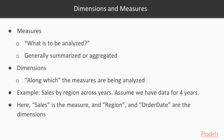Dimensions and Measures: Measures are what is to be analyzed, such as sales, revenue, or profit. Measures are generally summarized or aggregated; the common aggregations are count, sum, average, minimum, maximum, and standard deviation. Dimensions are along which the measures are being analyzed — they are used to slice or group the measures. For example, sales by region across years: sales is the measure, and region and order date are the dimensions.